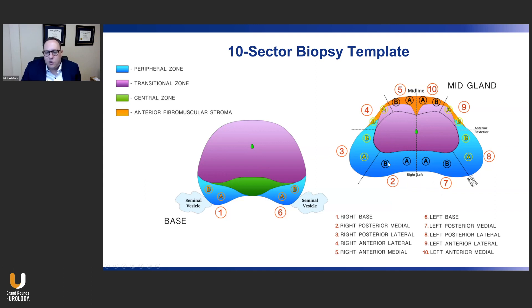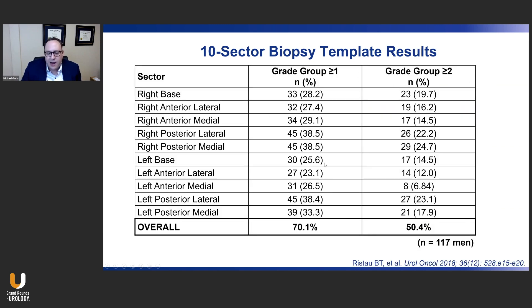In large prostates, reaching the base from an apex-to-base direction is challenging, so we additionally biopsy laterally at the base to complete the 10-sector technique. Data published by Ben Ristow and Dr. Matt Alloway in Urologic Oncology show that prostate cancer can be found in each and every one of those sectors at fairly significant frequency. Based on these data, we feel it is necessary to biopsy the entire rim of the peripheral zone using a 10-sector approach, or an 8-sector approach if the prostate is quite short.